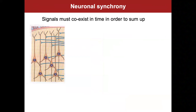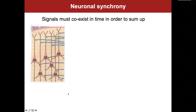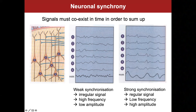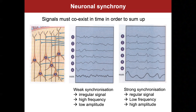There is also the importance of neuronal synchrony. Action potentials are not only too small and too local, but also too short-lasting to sum up. Signals must coexist in time, so the cellular population needs to be synchronized. With weak synchronization, you get an irregular signal, and the sum has a relatively high frequency and low amplitude. With strong synchronization, you have a much more regular, synchronized signal giving rise to a sum with low frequency and high amplitude due to increased summation. This underlies the general rule that in the EEG's spectral power, lower frequencies have much higher power than higher frequencies.